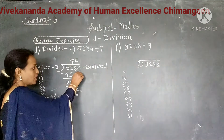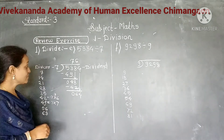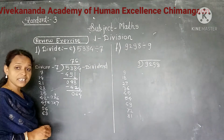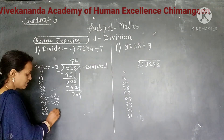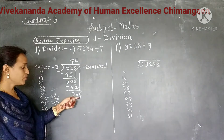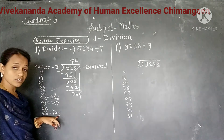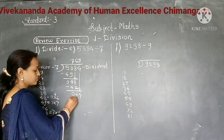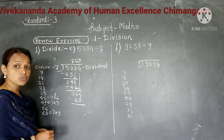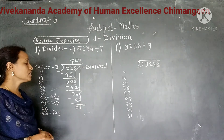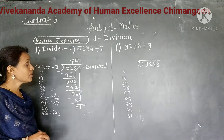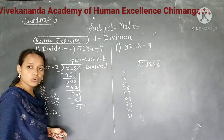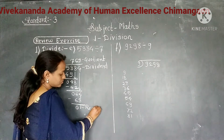Next digit 4, we bring down to make 64. Now we divide 64 by 7. But 64 is not in the multiplication table of 7. So less than 64 is 63, which comes in the 9th place of the multiplication table of 7. So we divide 64 by 7, it gives 9 as a quotient. Write 9 as a quotient in the ones place and write product 63 below 64. Subtract, it gives 1. So dividing 5384 by 7 gives 769 as a quotient and 1 as a remainder.